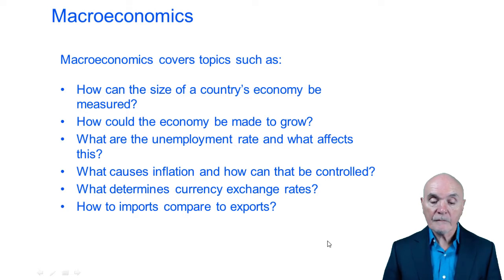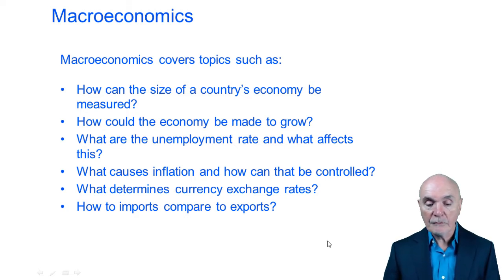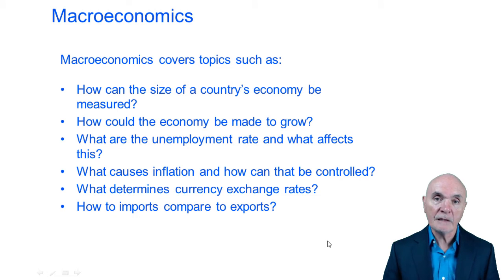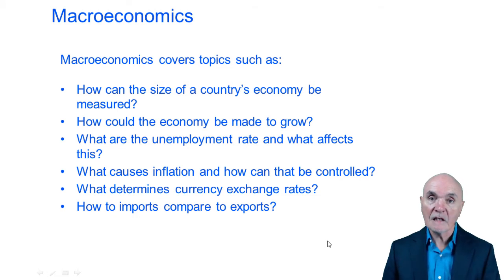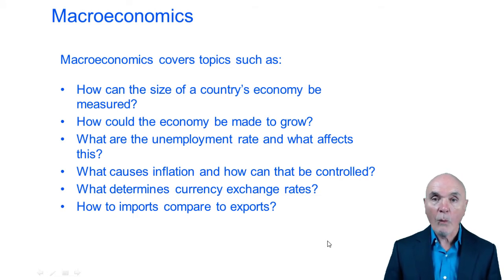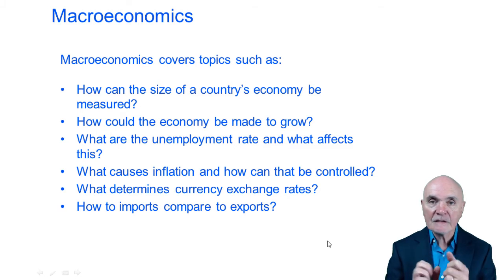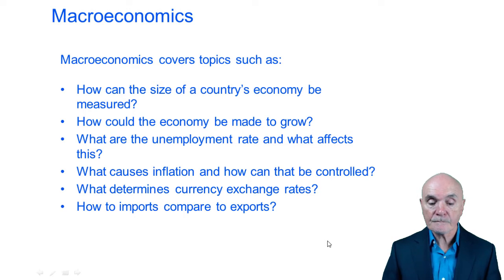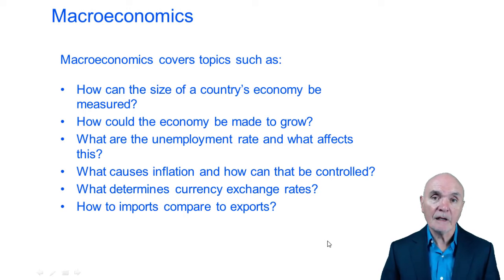What about unemployment? What is the unemployment rate? What affects it? If we've got 10% of people out of work, how can we get that down to maybe only 6% of people out of work? What sort of macroeconomic levers does government have to affect unemployment? Inflation — how can that be controlled?